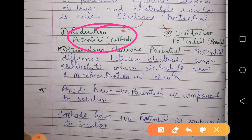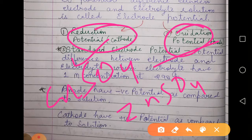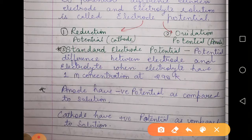If we are talking about reduction, we consider CuSO₄; if about oxidation, we consider ZnSO₄. The standard electrode potential is measured when the concentration of the solution, temperature, and all other conditions are fixed — the potential difference at the electrode-electrolyte interface under those conditions is called the standard electrode potential.